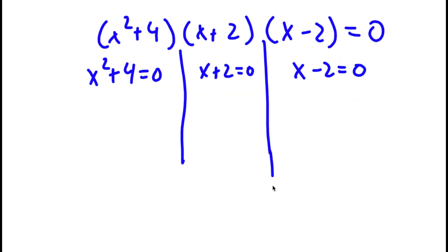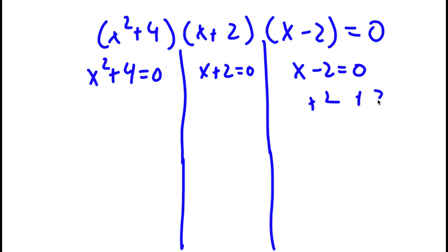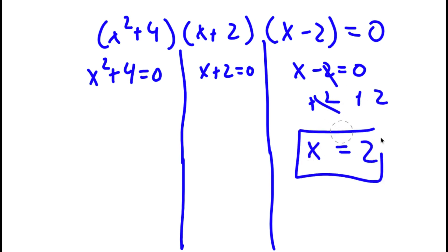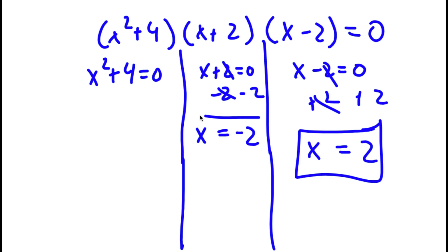For x minus 2 equals 0, all I have to do is add 2 on both sides — these cancel out — and I'm left with x is equal to 2. So this is one solution. For x plus 2 equals 0, I subtract 2 on both sides and I get x is equal to negative 2. So this is my second solution.